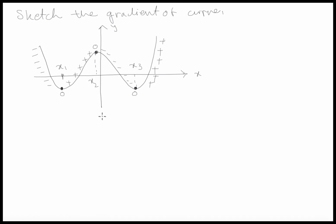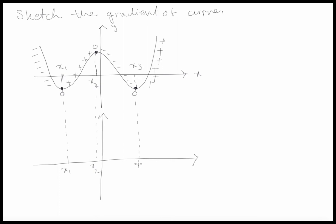So now that we have that, we draw another set of axes just underneath it, just so we can compare the different parts together. I'll draw lines going from those points down to this graph underneath. So this is again x1, this is x2, and this is x3. Now what we know is that your gradient at these three points is zero.